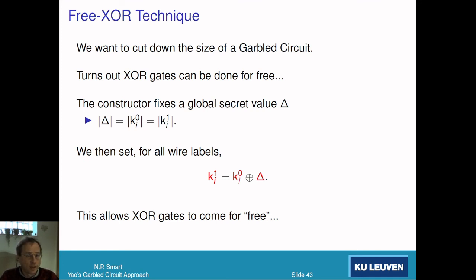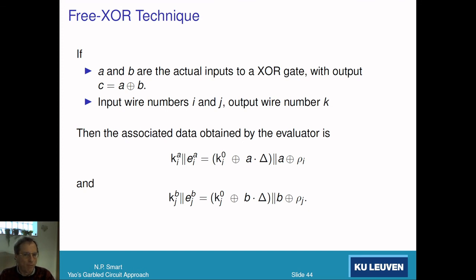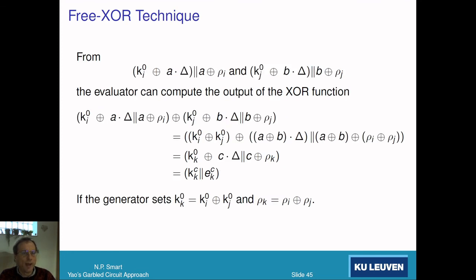Now instead of choosing these labels completely at random, we choose one label at random, but the second label we make as k_i^0 XOR Δ, where Δ is fixed across the entire circuit. The zero label is chosen at random, but the one label is chosen as the zero label XOR this fixed Δ. Remember, you're only ever going to reveal one of those labels at any one time, so you never actually reveal Δ through the protocol. We can then add our signal bits in as usual.